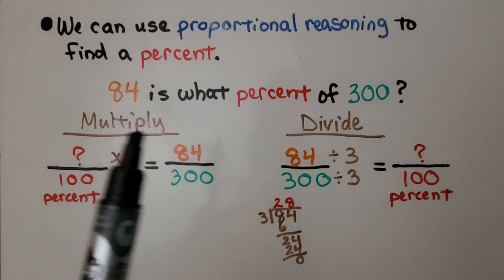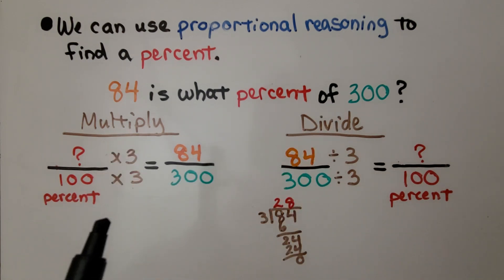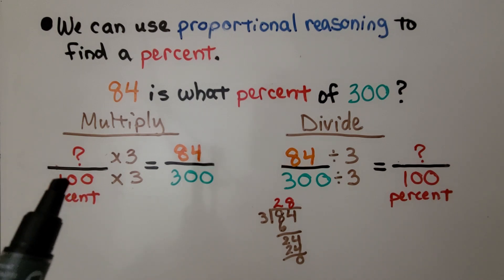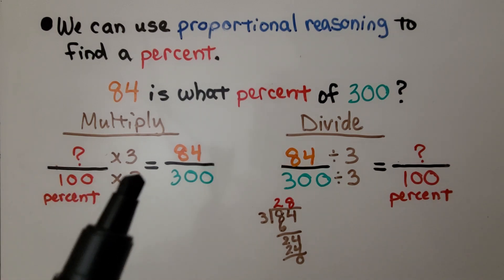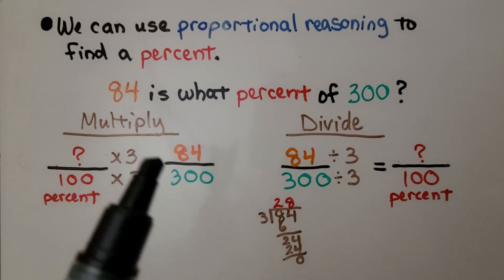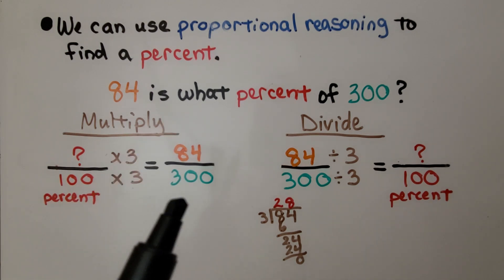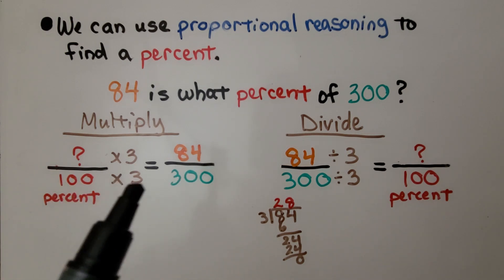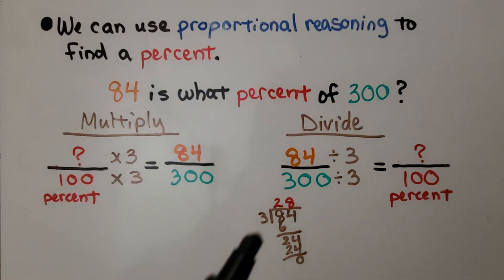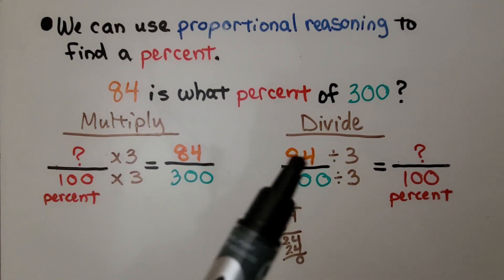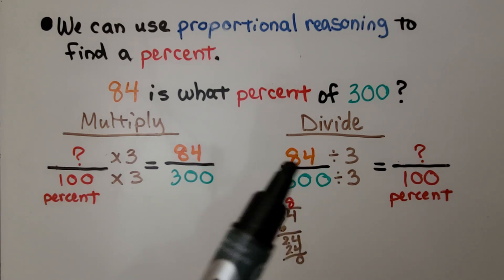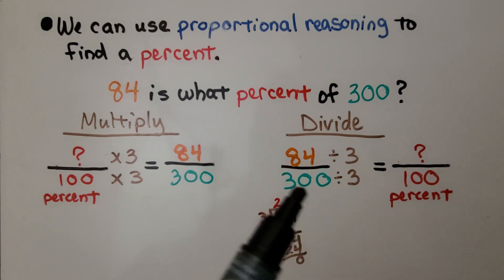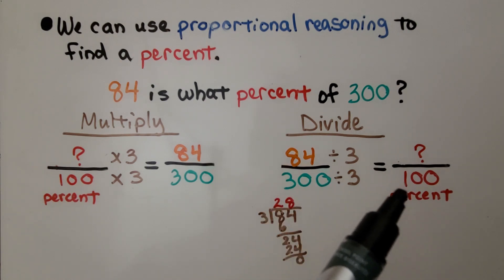We can multiply or divide. If we multiply, we're going to put our unknown percent over 100, and we've got our 84 over the 300. This is the part, this is the whole. Because we're going from 100 to 300, we're going to multiply by 3. If we write the part and the whole that we know on the left side, we're going from 300 to 100, so we're going to divide to go down to 100.